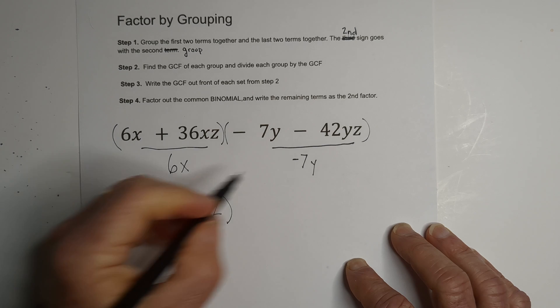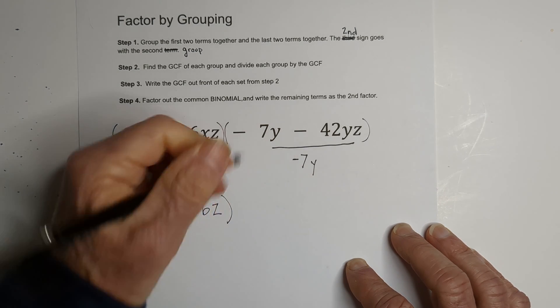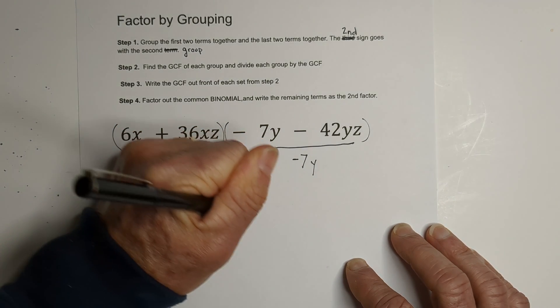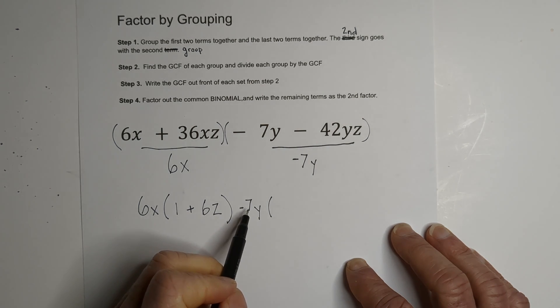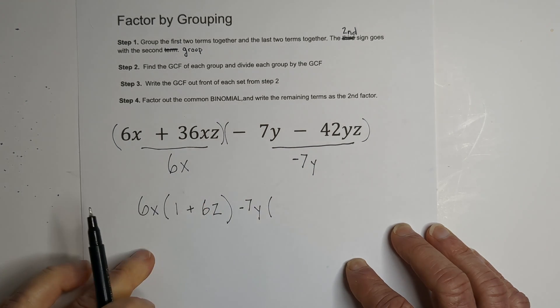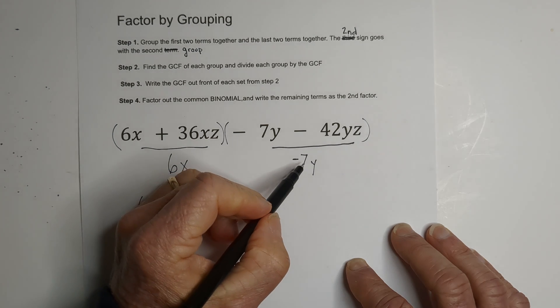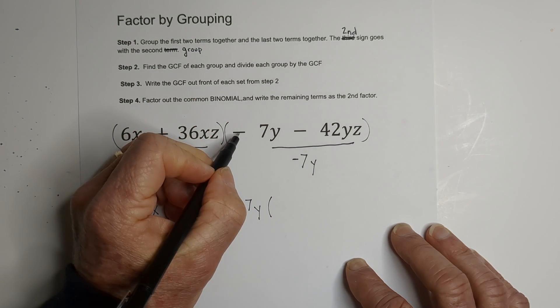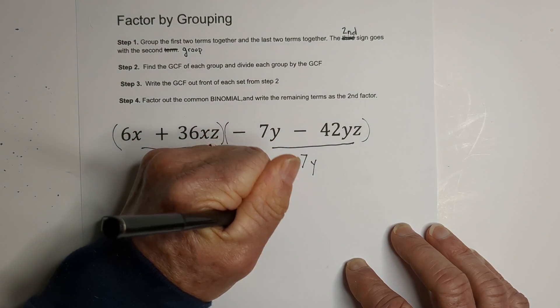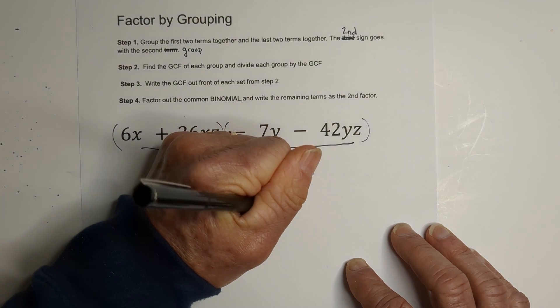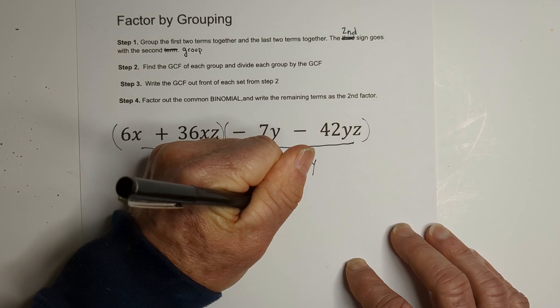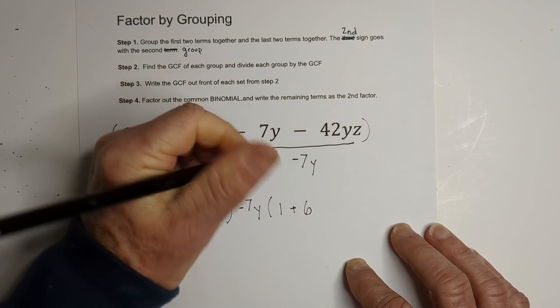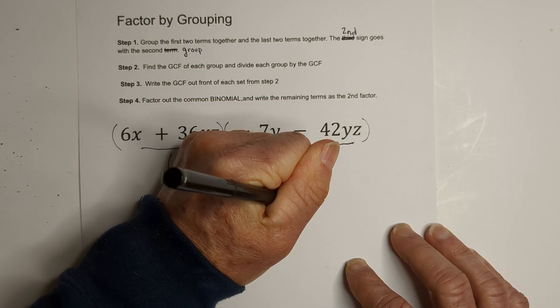Now we write the GCF out front, and now you will notice how it ends up factoring out the negative sign. So this becomes a negative 7y, negative 7y becomes a 1, and then minus a negative and a negative is a positive. That becomes a 6, y's cancel z.